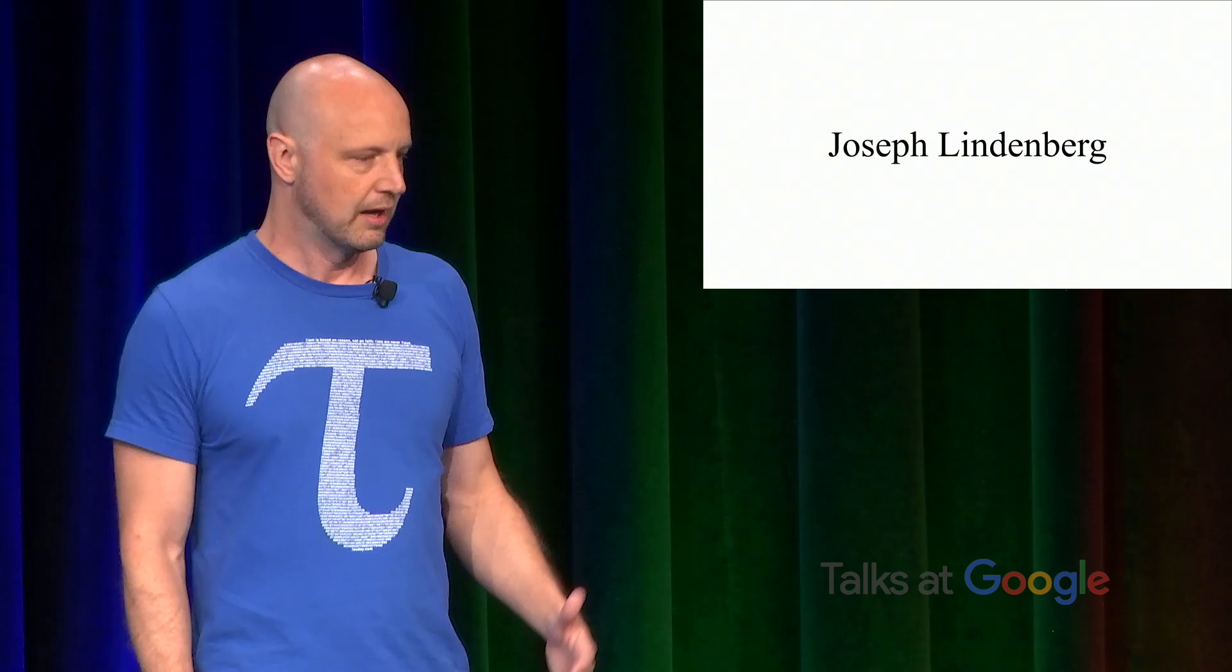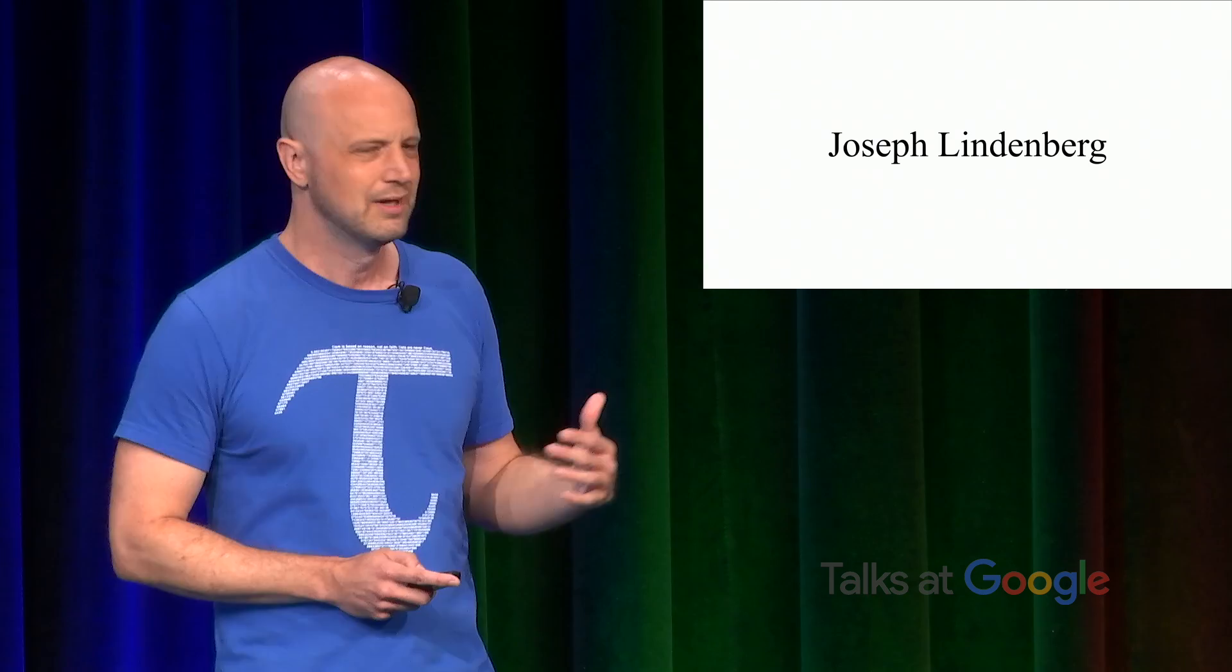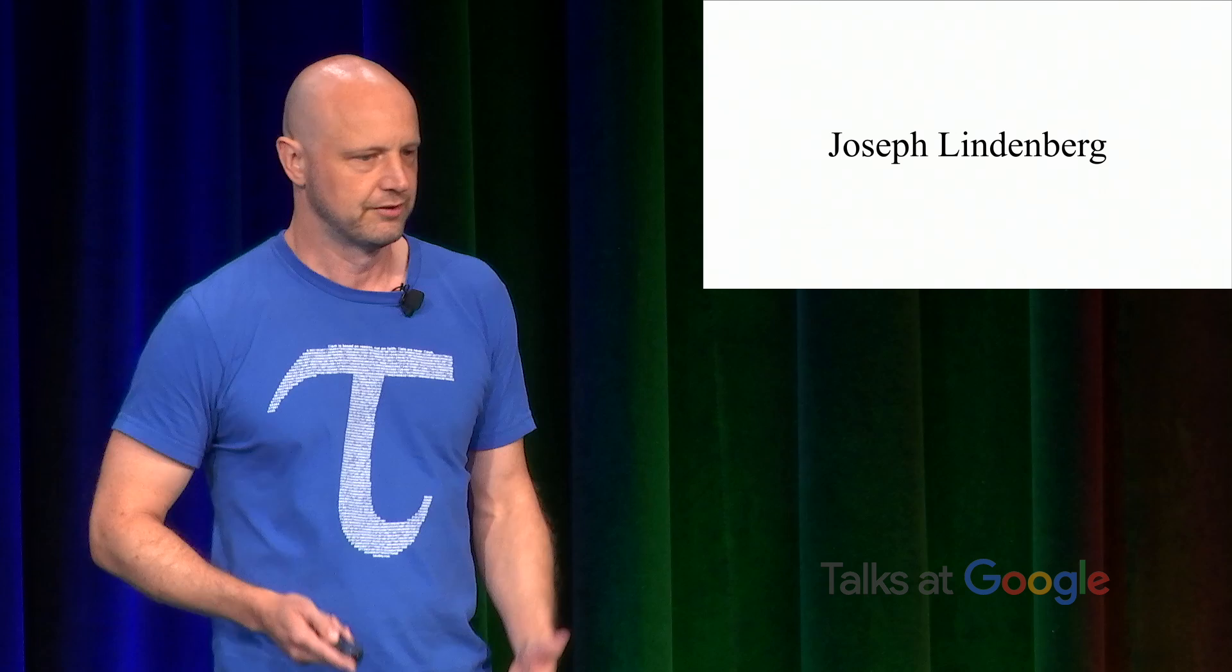So at the time, he was restricted to the Roman alphabet and the Greek alphabet. So he looked through, he thought, well, which letter feels most like a circle constant and minimizes the number of conflicts? Which is the least bad choice? And he came up with Tau as well. In fact, Joseph now maintains a website called Tau before it was cool.